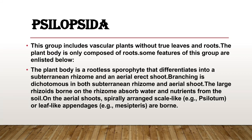Psilopsida: this group includes vascular plants without true leaves and roots. The plant body is only composed of rhizome and shoots. Some features of this group: the plant body is rootless, differentiated into an underground rhizome and aerial erect shoots. Branching is dichotomous in both the subterranean rhizome and aerial shoot. Large rhizoids born on the rhizome absorb water and nutrients from the soil.